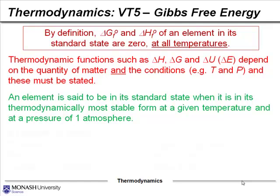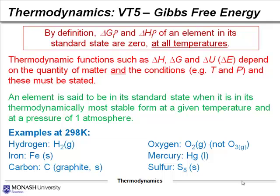Here are a few examples. Hydrogen at one atmosphere at room temperature is a gas. Iron is a solid. The standard state for carbon is graphite. The standard state for oxygen is O₂ as a gas — not ozone. Ozone would not be in its standard state and so has a non-zero ΔGF° and ΔHF°, whereas for oxygen it is zero. Mercury is the only metal that is a liquid at room temperature, so it's a liquid in its standard state. Sulfur is in an S₈ molecule in solid form when in its standard state.